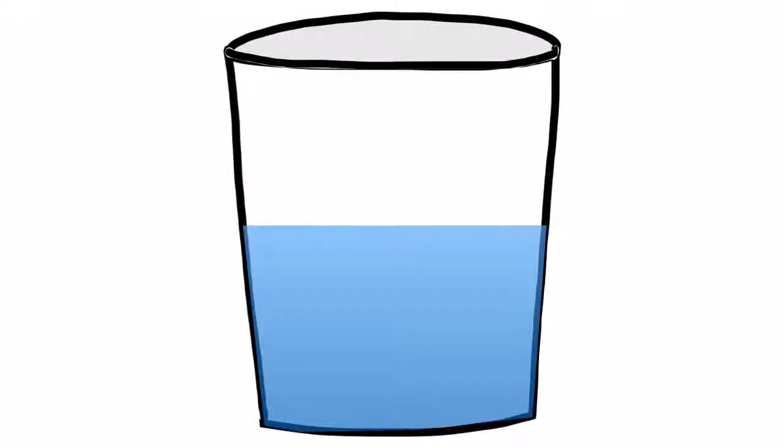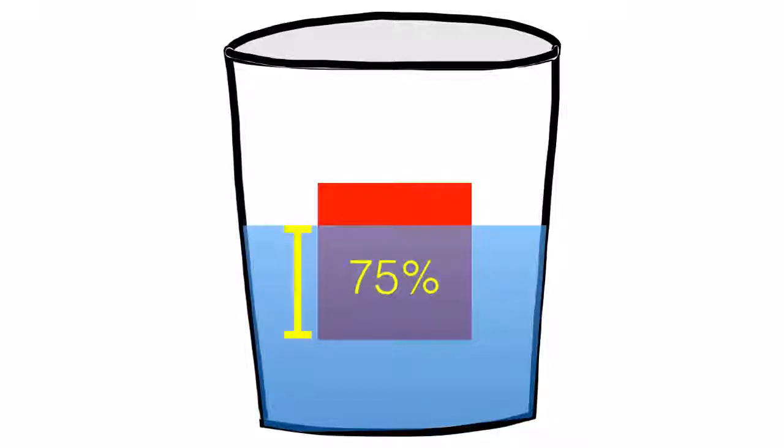For example, if 75% of a block is below the waterline, its density is 0.75.